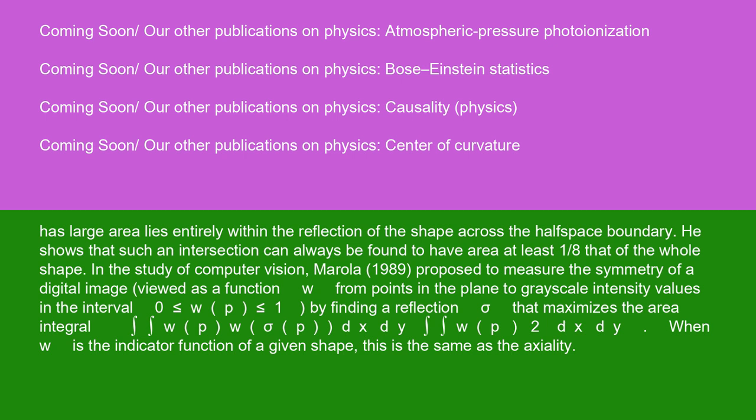In the study of computer vision, Merola (1989) proposed to measure the symmetry of a digital image, viewed as a function w from points in the plane to grayscale intensity values in the interval 0 ≤ w(p) ≤ 1, by finding a reflection σ that maximizes the area integral ∫∫ w(p)w(σ(p))dxdy / ∫∫ w(p)²dxdy. When w is the indicator function of a given shape, this is the same as the axiality.